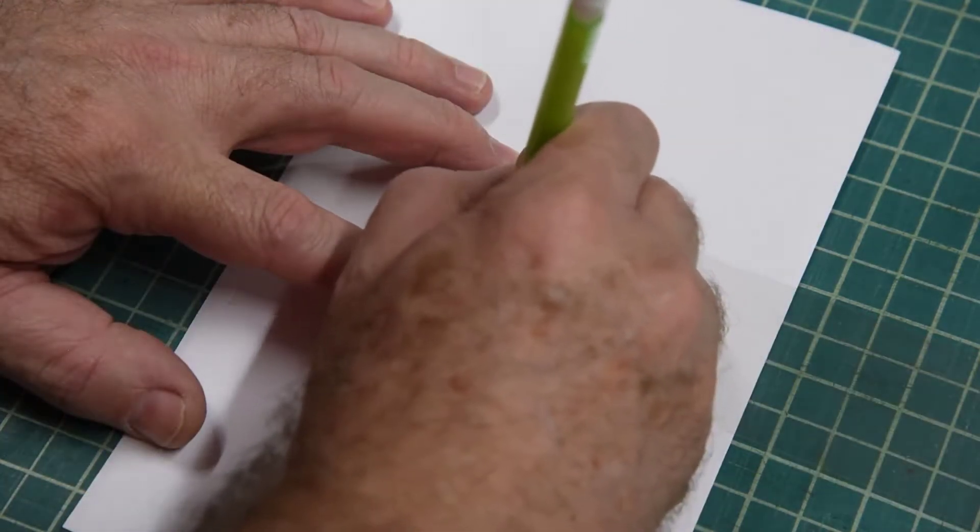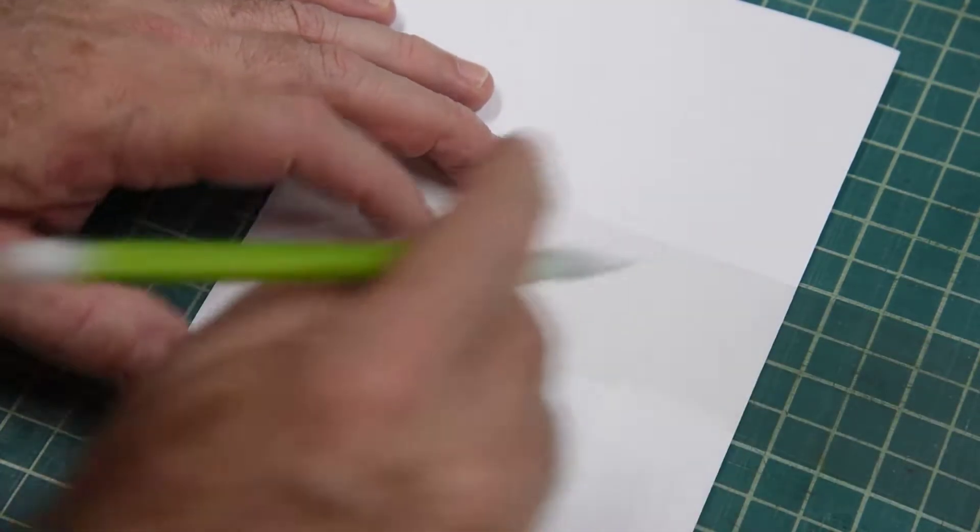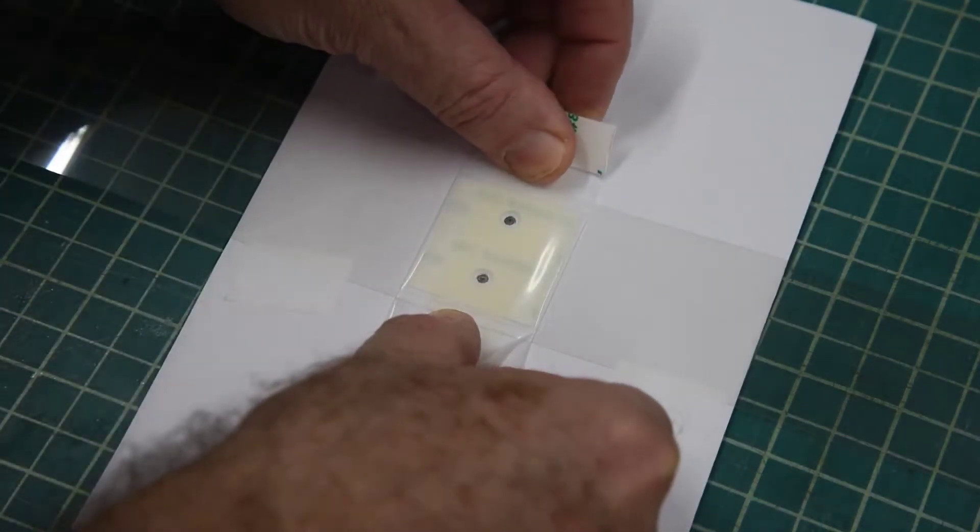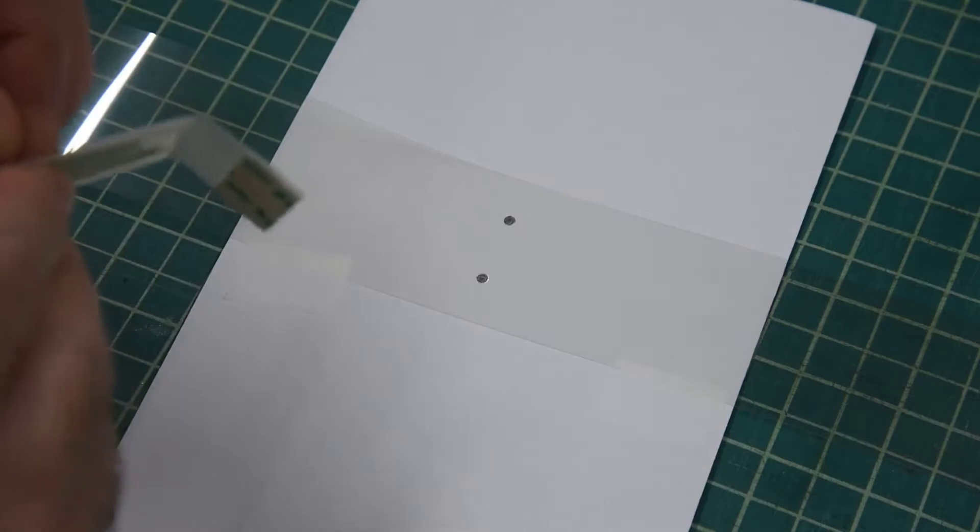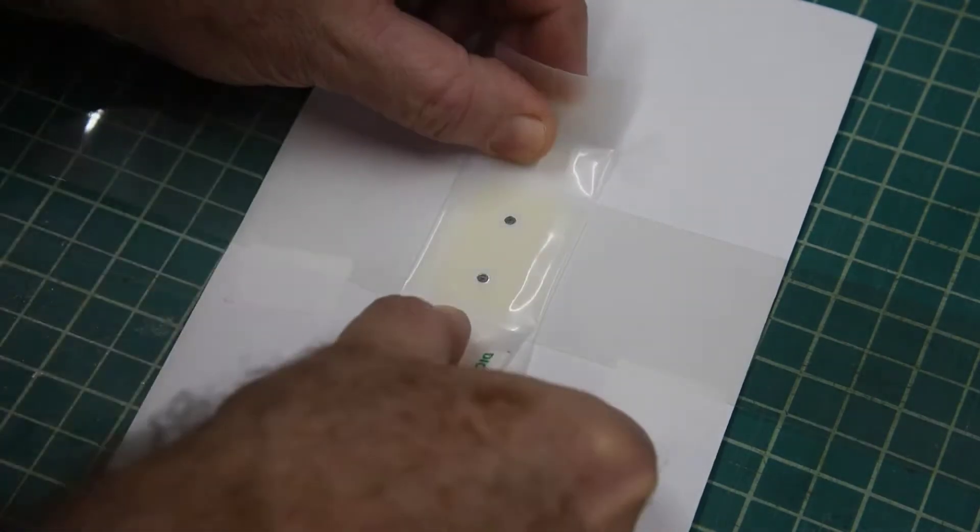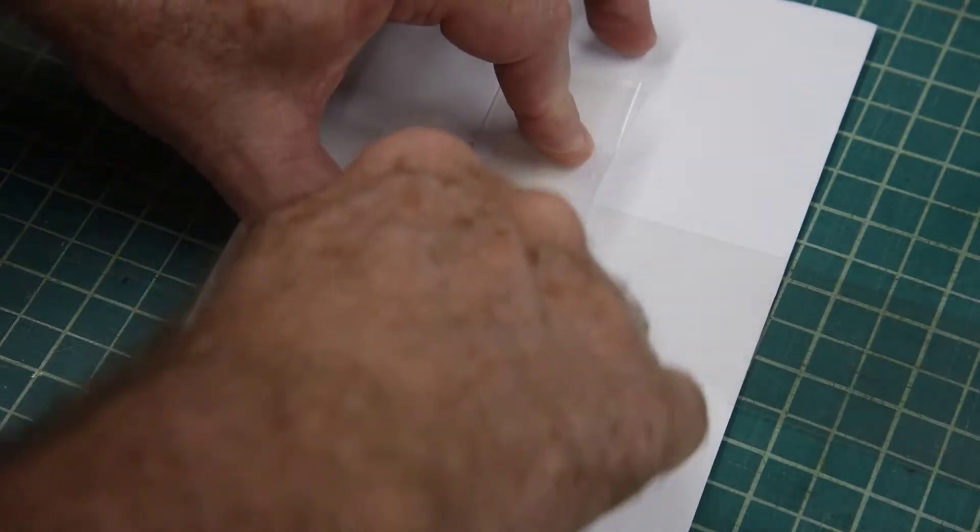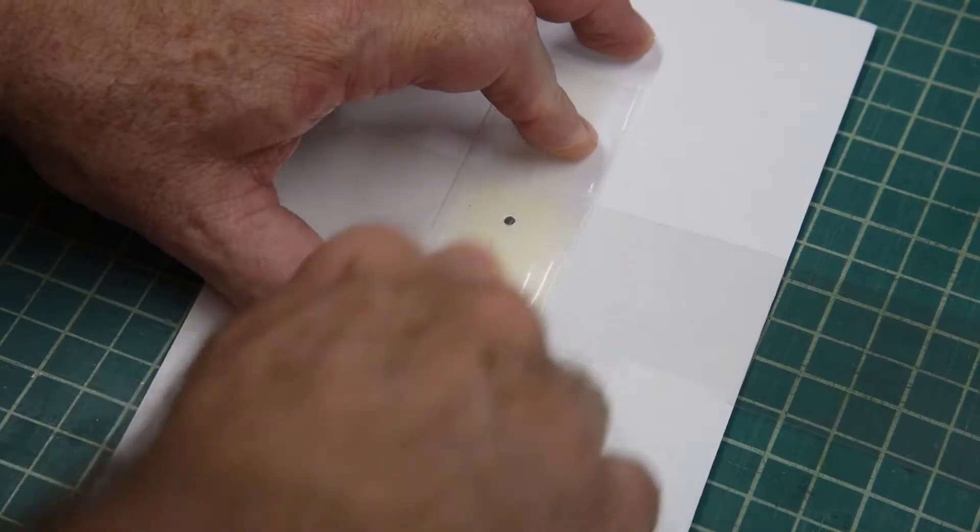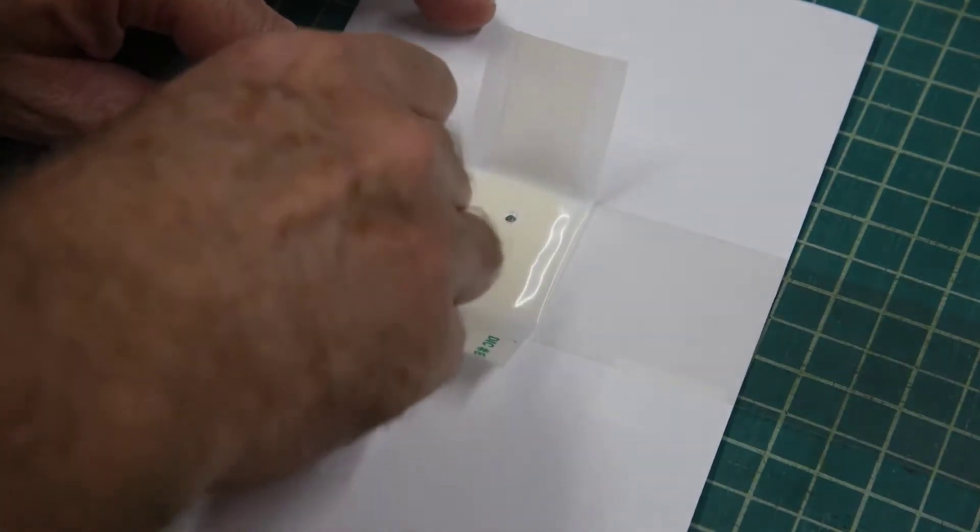The outer mylar has a narrow adhesive at one end with release paper. The two clips attach to the mylar on the opposite side of the release paper, so the outer mylar is laying with the release paper facing down as I attach the clips. Now the cable assembly is ready to install.